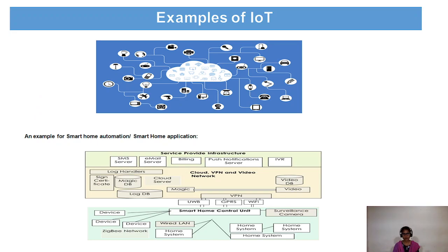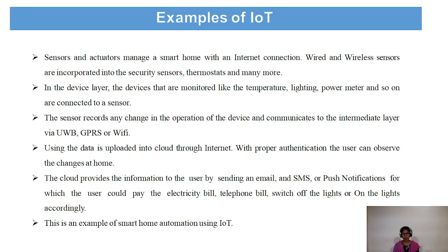These are some examples of IoT. In this picture we can see airplanes, LEDs, mobiles, printers, laptops, and vehicles — all connected to the Internet of Things. For smart home applications, we use sensors for controlling LED lights, fans, TVs, watches, and mobiles. The smart home has a control unit with a surveillance camera, connected using wireless LAN, GPRS, Wi-Fi, and UWB. The service provider infrastructure includes cloud, VPN, and video network services.